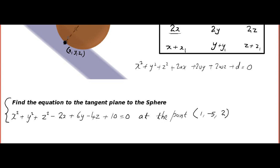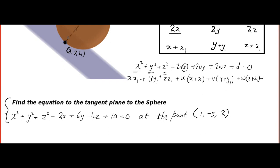If the point of tangency is known — that is, you know the point of contact on the sphere — then all you have to do is write x·x1, y·y1, z·z1. For the linear terms: u times (x + x1) plus v times (y + y1) plus w times (z + z1) plus d = 0. You can use this memory aid or memorize it as a formula.